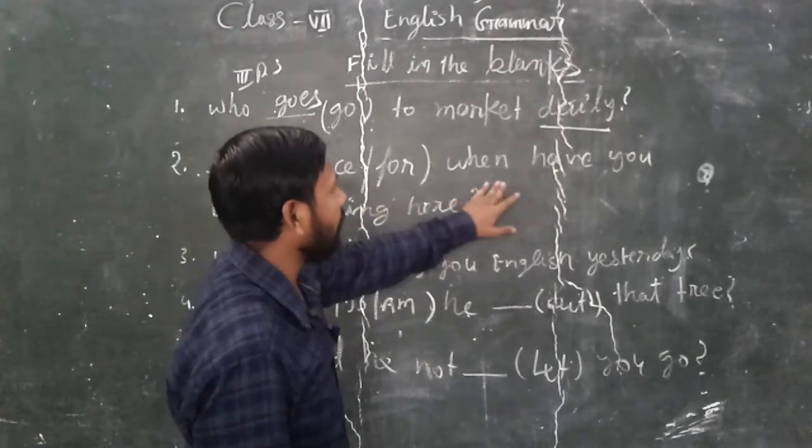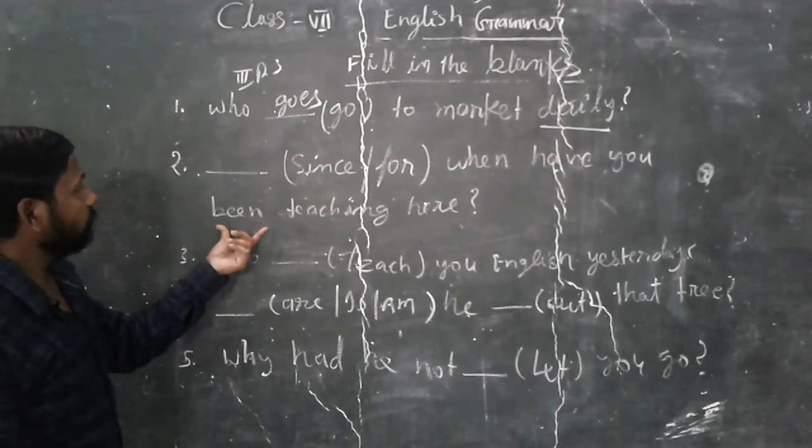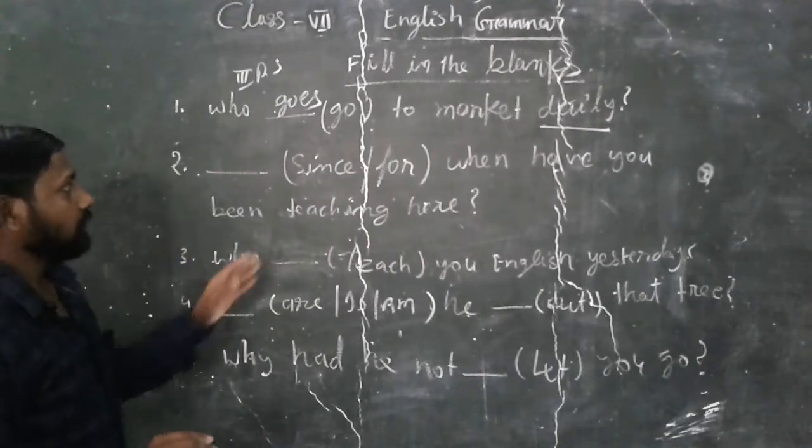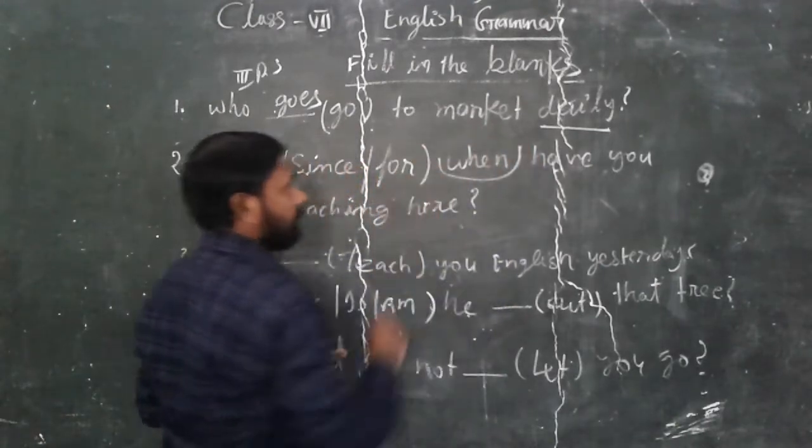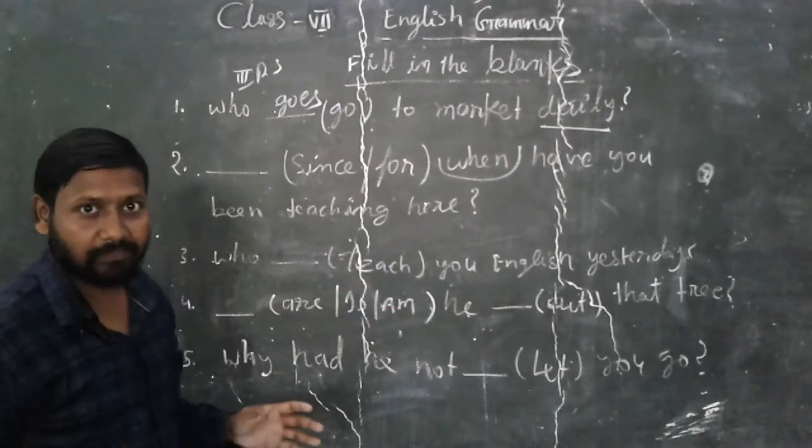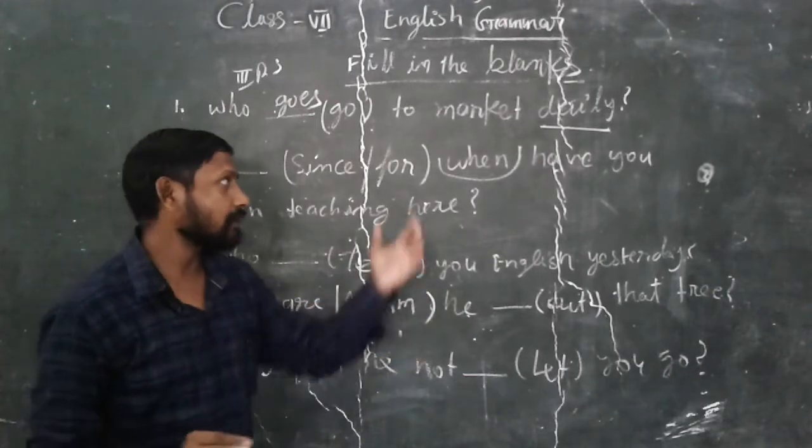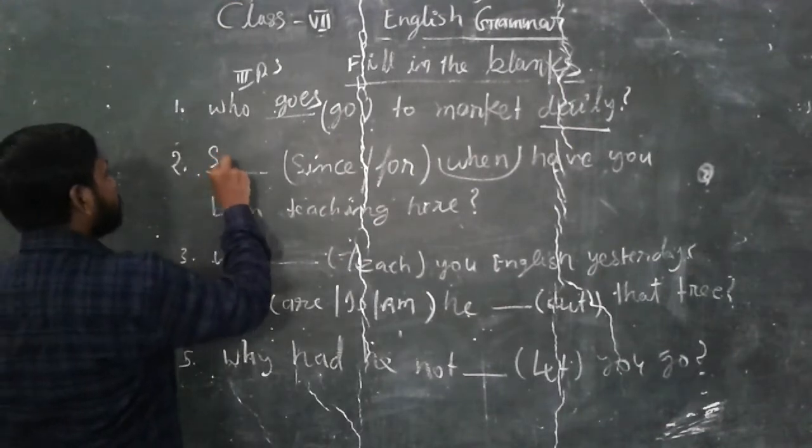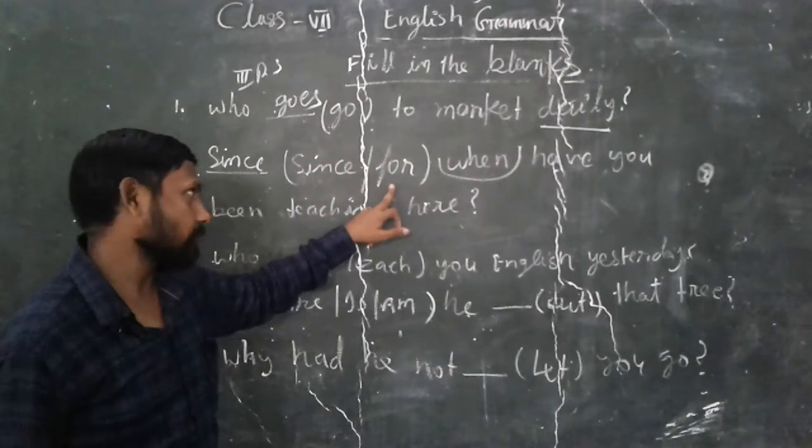Since and for has been given, when have you been teaching here? So it is asking all the time. Since when or for when? If you have given when, so definitely you should cram it and commit it into your memory that when will be given there, so you are to feel always since. For will never.